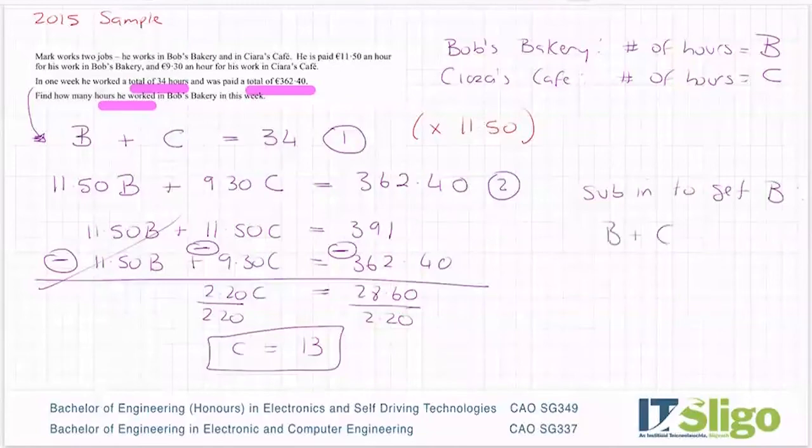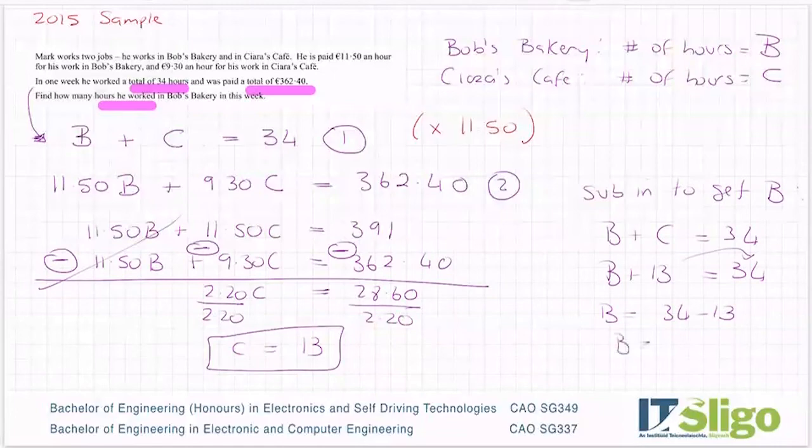So I had B plus C being equal to 34. I now know that C is 13. So bring it over or subtract from both sides. So 34 minus 13 is 21.